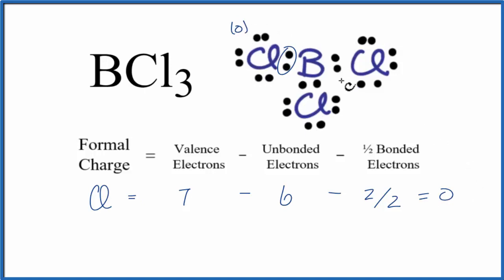So the formal charge on the chlorine is 0. And since these chlorines are all the same, the formal charge in each one of those can be 0 as well.